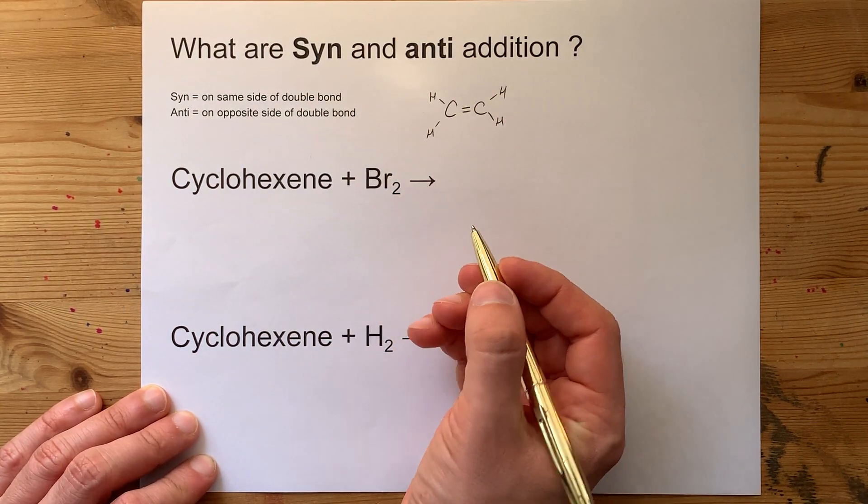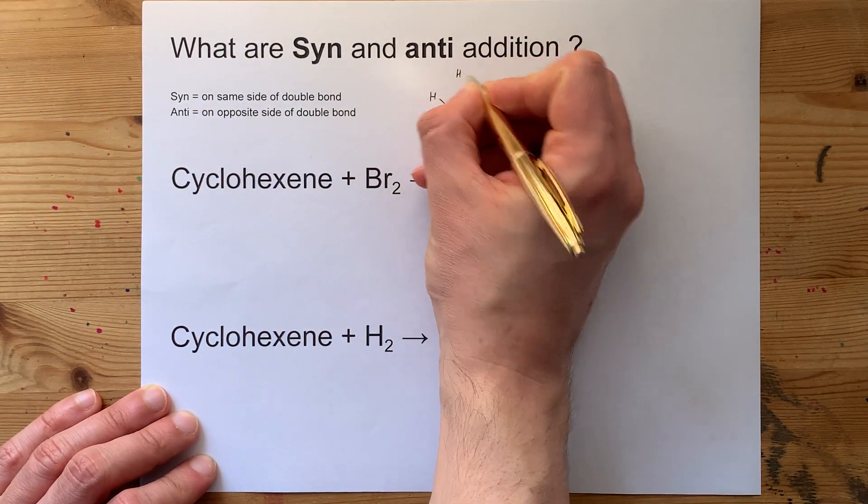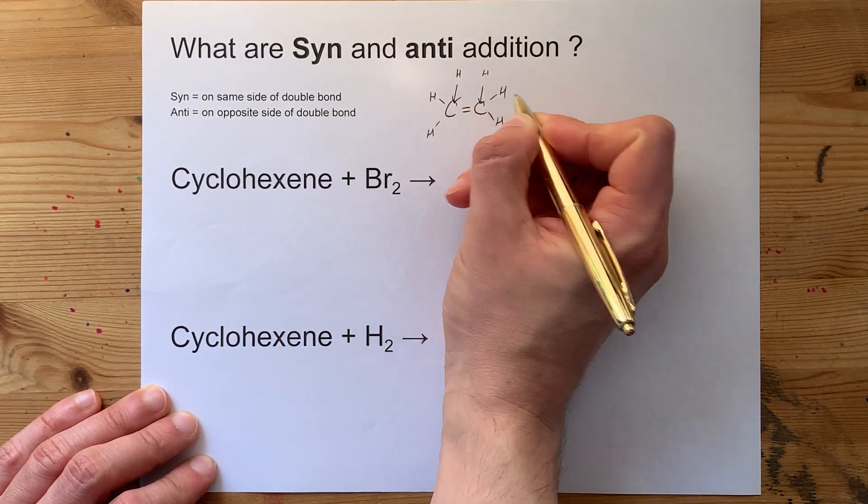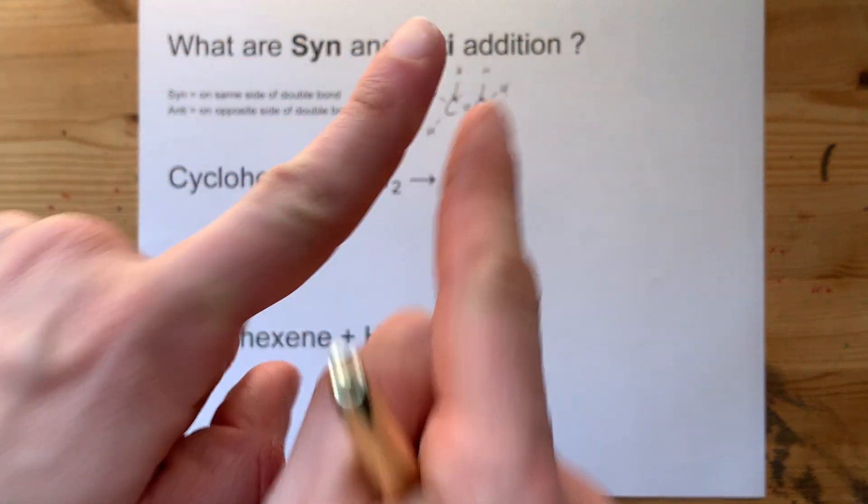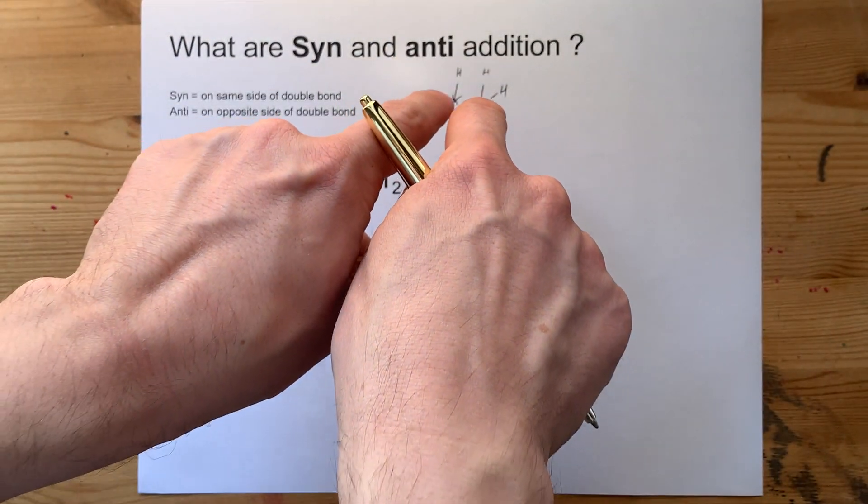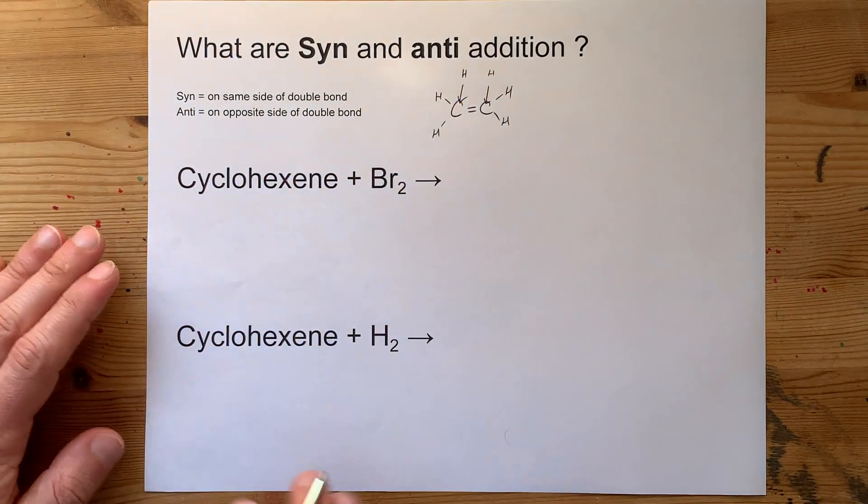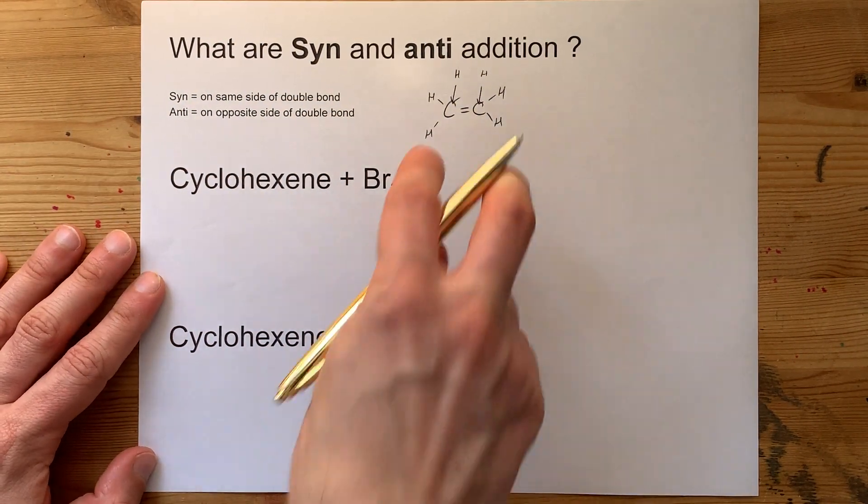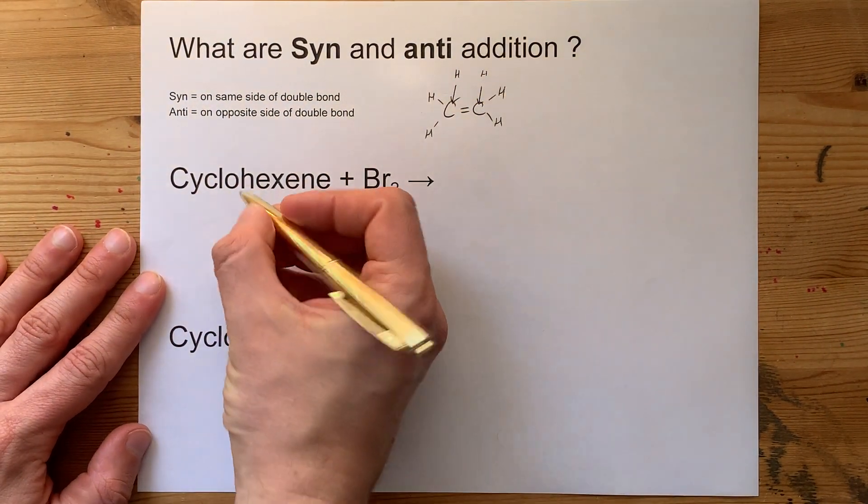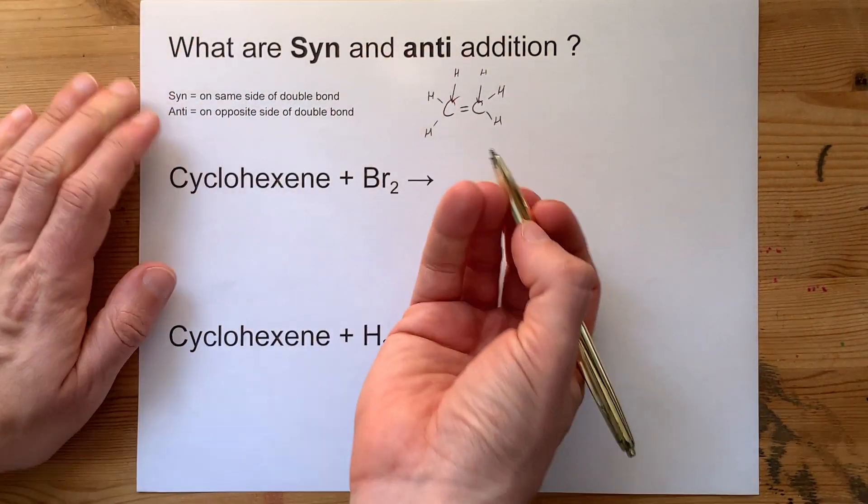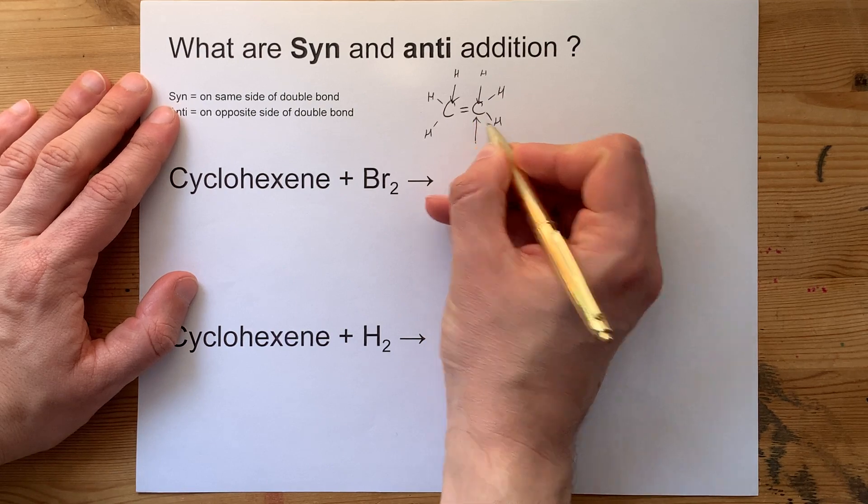Syn would be if we added two new things, perhaps two H's, both coming at it from the top. And by the top, I mean from way up here, attacking it at a 90 degree angle to the plane of the molecule, both on the same side. Whereas anti is if one hydrogen took it from the top and the other one came from the bottom.